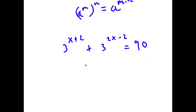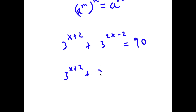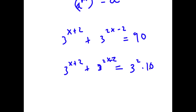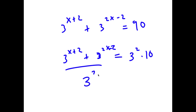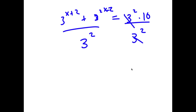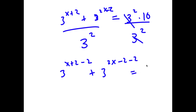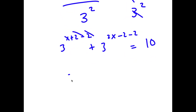Now 90 here is equal to 3 to the power of 2 times 10 — since 3 to the power of 2 is 9 and 9 times 10 is 90. So I'm going to divide both sides by 3 to the power of 2, so these two cancel out. And 3 to the power of x plus 2 over 3 to the power of 2 is the same thing as 3 to the power of x plus 2 minus 2, and 3 to the power of 2x minus 2 over 3 to the power of 2 is the same thing as 3 to the power of 2x minus 4. The 2 and negative 2 cancel out, so I have 3 to the power of x plus 3 to the power of 2x minus 4 is equal to 10.